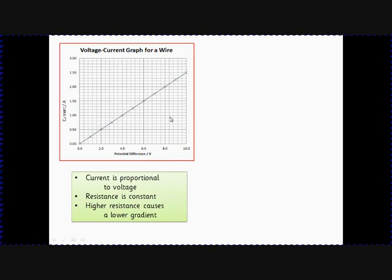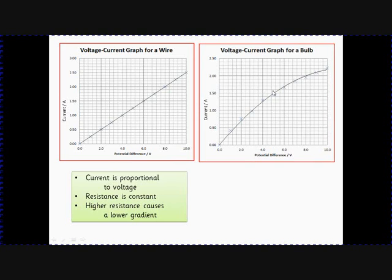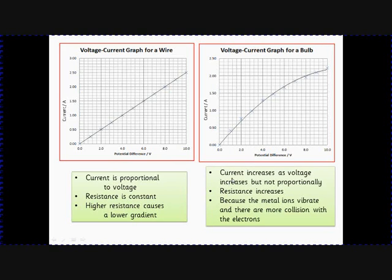If you look at the graph for a bulb, it curves. Why does it curve? Well because the current increases as the voltage increases but not in proportion. So this is not a proportional relationship. Why not? Because the resistance increases. Why is that? And this is a crucial point - the model we use is that the wire is made of metal ions and the metal ions vibrate. So as the wire gets hotter there are more vibrations, the vibrations are faster, which causes more collisions with the electrons and therefore more energy is lost on the way through and therefore the resistance is higher.